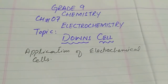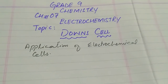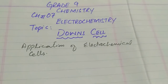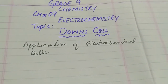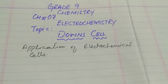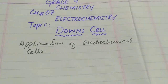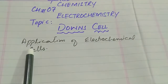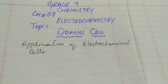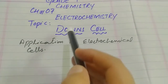Assalamualaikum girls, welcome to chemistry class. Today our next topic is the Down Cell. This comes under chapter number seven, that is electrochemistry. We have discussed two processes and two types of cells: the electrolytic cell and galvanic cell. Today we will discuss the application of the electrochemical cell in daily life and industrial use, starting with the Down Cell.